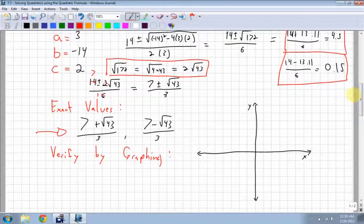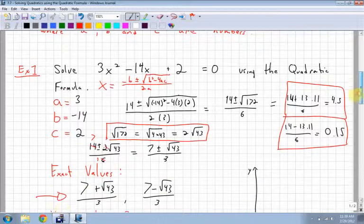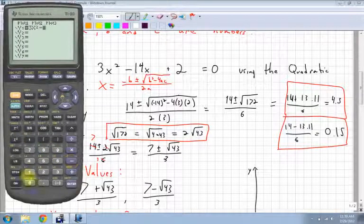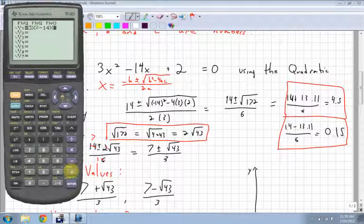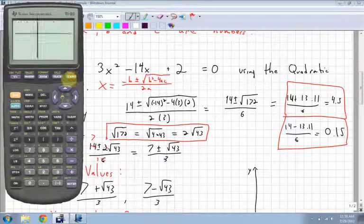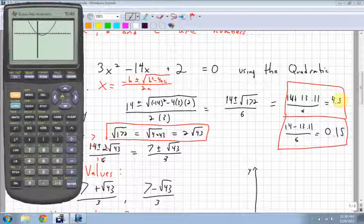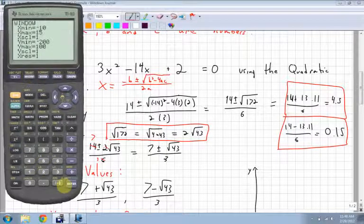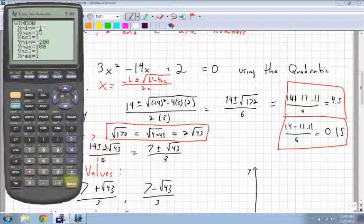Now, verify by graphing. What does that mean? It means I'm going to take my graphing calculator and plug in this equation: 3x squared minus 14x plus 2. I graph it, and it cuts through at 4 and a half and at 0.15. Let's actually change our window settings then to negative 1 and all the way up to 5, just so it zooms in a lot. Let's graph that.